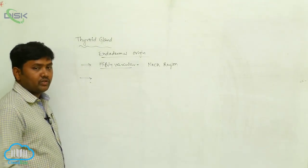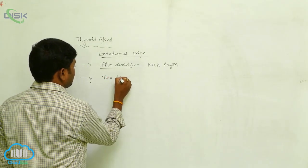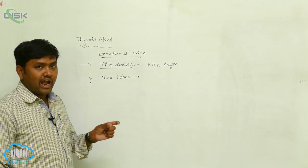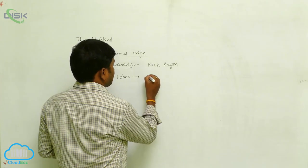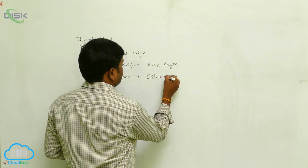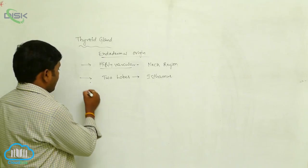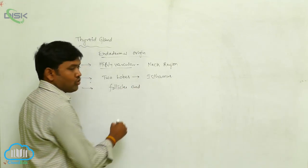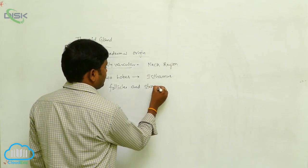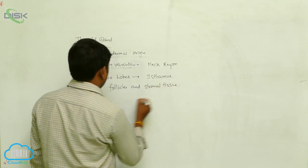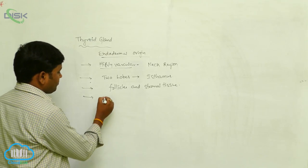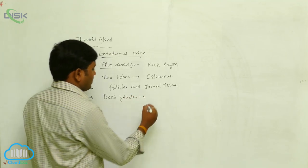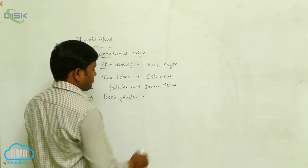The thyroid gland consists of two lobes. These two lobes are connected by a flat tissue called the isthmus. Each lobe consists of follicles and stromal tissues.